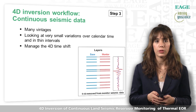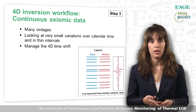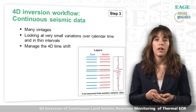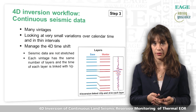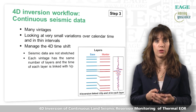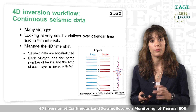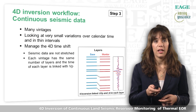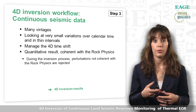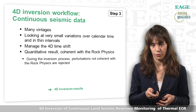The third key point, and very important, is how we managed to take into account the 4D time shift. Quite often in 4D inversion, the reflectivity of the monitors is aligned to the base. It wasn't the case here — the seismic data were not stretched prior to inversion. Each vintage has the same number of layers, and the time thickness of each layer is linked to the P velocities, so the time shifts are inverted. Finally, during the inversion process, perturbations inconsistent with rock physics are rejected. Let's look at the results of the 4D inversion.